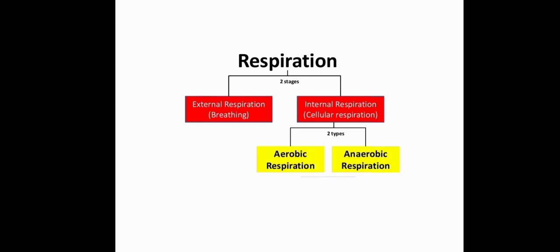Aerobic respiration means oxygen is present, or the organism requires oxygen. Anaerobic means the organism does not require oxygen. Some bacteria don't require oxygen — they are anaerobic organisms. We, on the other hand, require oxygen, so the condition inside our cells is aerobic.